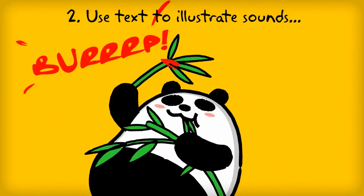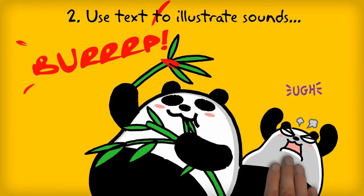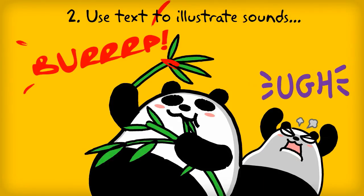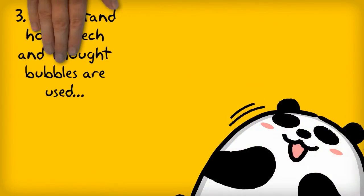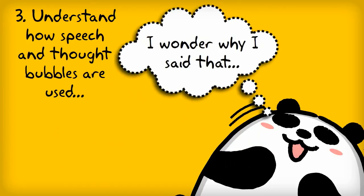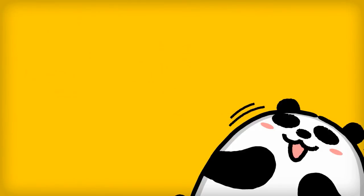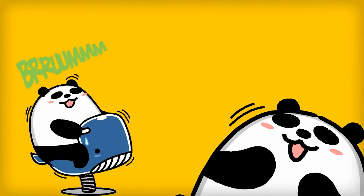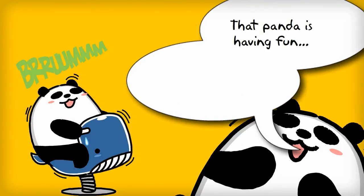You can use interesting text and fonts to illustrate sound — you don't always have to use audio. Speech bubbles with tails indicate the spoken word and should point to the mouth. Those with bubbles indicate thoughts and should point to the head. Joined balloons can be used if the thought process continues.